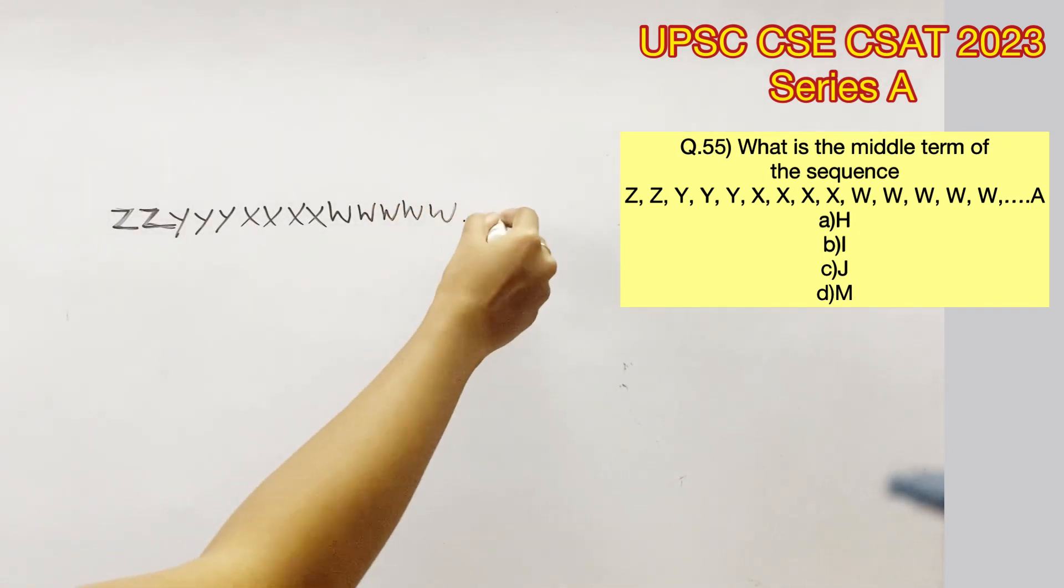Welcome to Aptitude Destination. Please pause the video and read the question completely. What is the middle term of the sequence Z, Z, Y, Y, Y, X, X, X, X and so on till A?